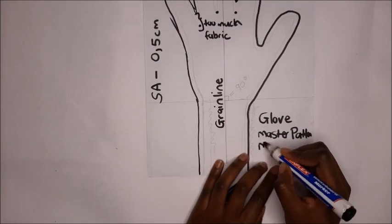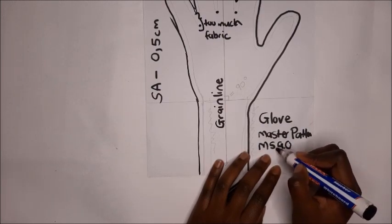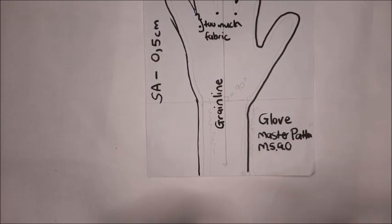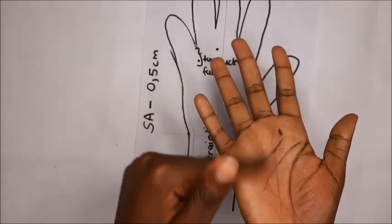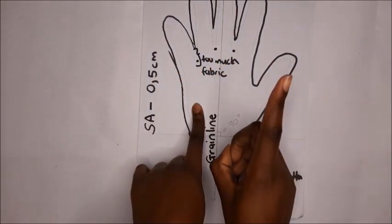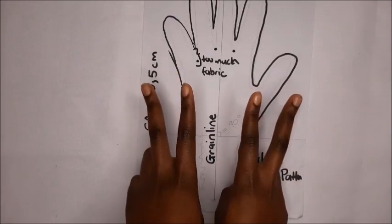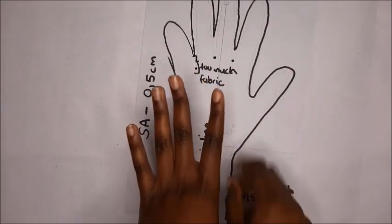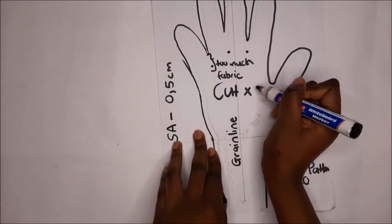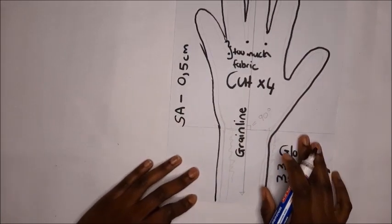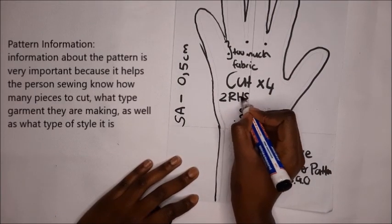We have two hands and we have the top and bottom for each hand. This pattern is only for one, either the top or the hand, so we need two for each. Two times two equals four, so I'm writing cut times four on the pattern. Two for the right hand side RHS and two for the left hand side LHS.